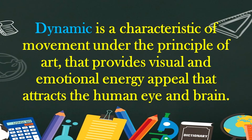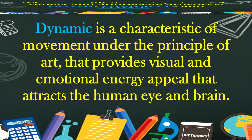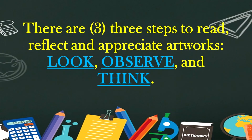Dynamic is a characteristic of movement under the principle of art that provides visual and emotional energy appeal that attracts the human eye and brain. There are three steps to read, reflect, and appreciate artworks. Step 1: Look, Observe, and Think.